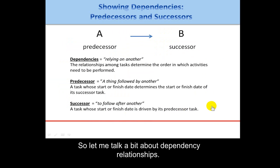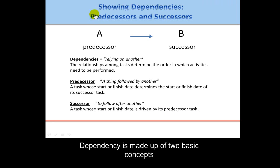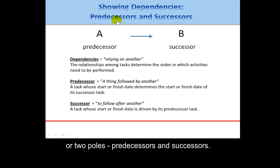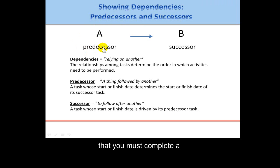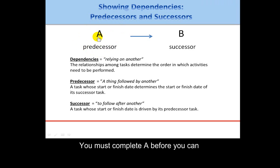Let me talk a bit about dependency relationships. Showing dependencies is made up of two basic concepts or two poles: predecessors and successors. Think about it this way — you must complete a predecessor activity; you must complete A before you can do the successor activity B.